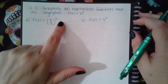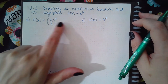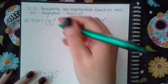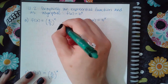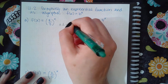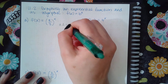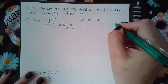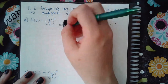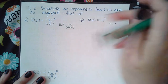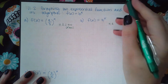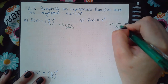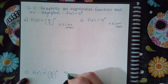Since I don't have a plus a number on the outside of the basic function, I know it's not going to shift up or down. So I actually know the horizontal asymptote for all of these — it's going to be y equals zero, or the x-axis, for all of them, because not a single one of these has a shift moving the graph up or down. So every single one of these has that horizontal asymptote.